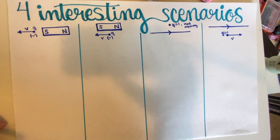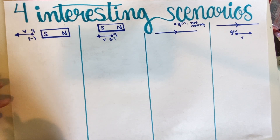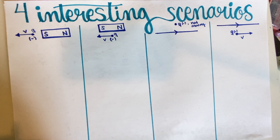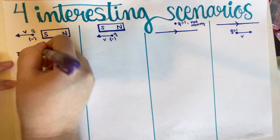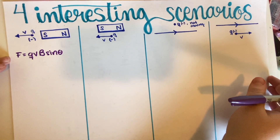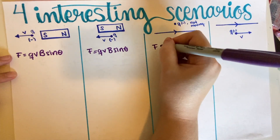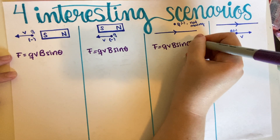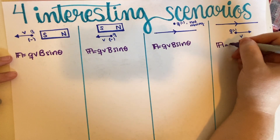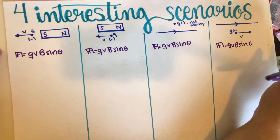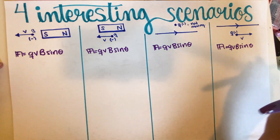We'll go one by one and decide whether there is a magnetic force or not. As a reminder from the equations, we have F = qvB sin(θ), which is our standard equation. This gives us the magnitude of the force. For the direction, we use the right-hand rule. So we need to figure out whether a magnetic force exists, and if it does, use the right-hand rule to determine its direction.